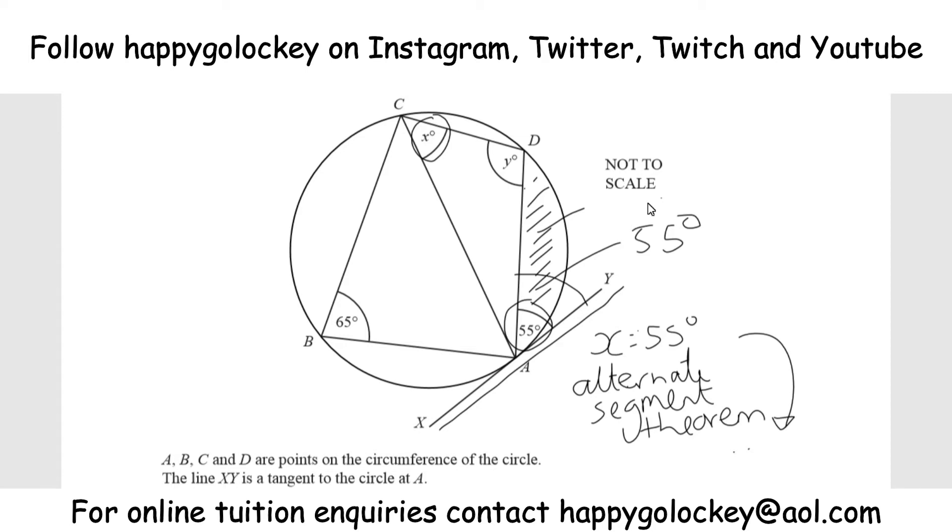Now let's find angle Y. Well, we're not given this, but we do know its opposite angle, and that wouldn't always help us, but what you can see is we've got four points. We've got A, B, C, and D. So we've got four points on the edge of a circle,